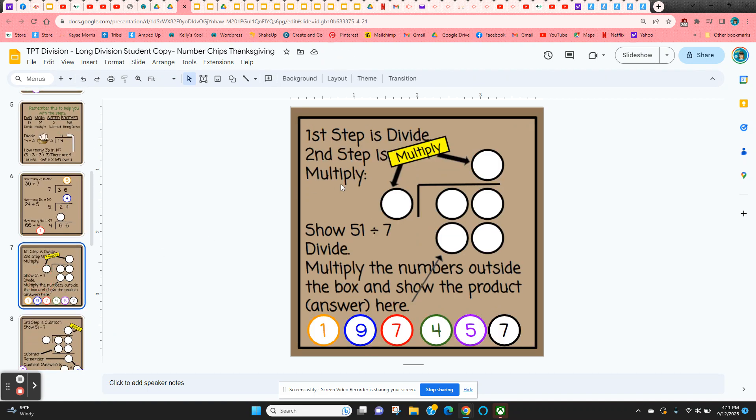Okay, now we're going to go to the second step. So they're going to do the first step and the second step. We have the problem 51 divided by 7. So they should know at this point where these numbers go.